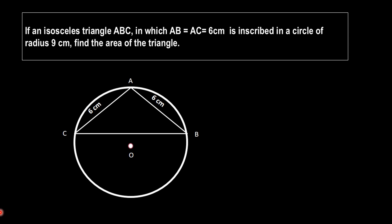How are we going to find the area of this triangle? In order to find the area, we need two values: one is the altitude and another is the base BC. We are taking a point E on the triangle, and that point is the midpoint of side BC. So E is the midpoint of BC.